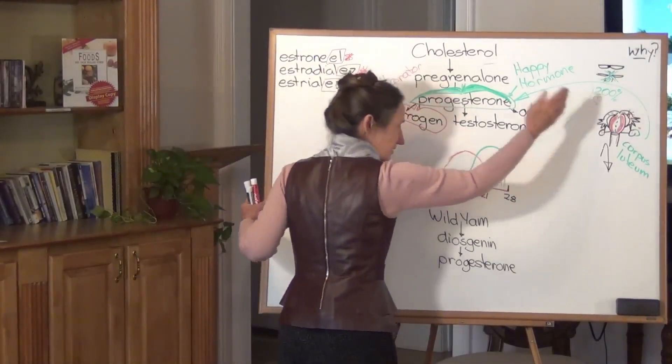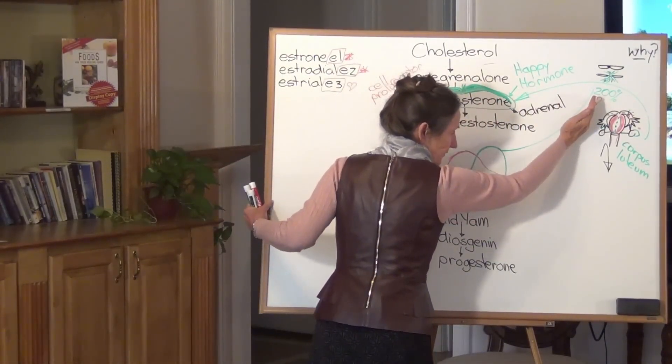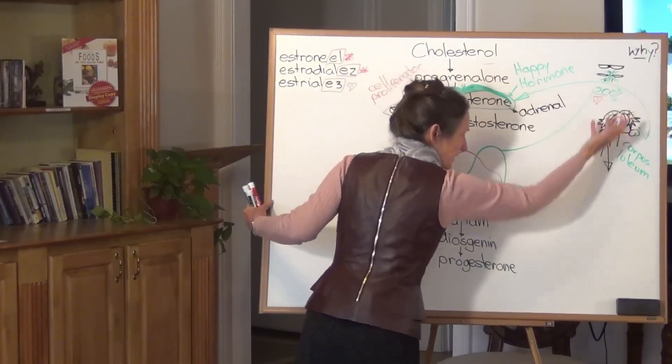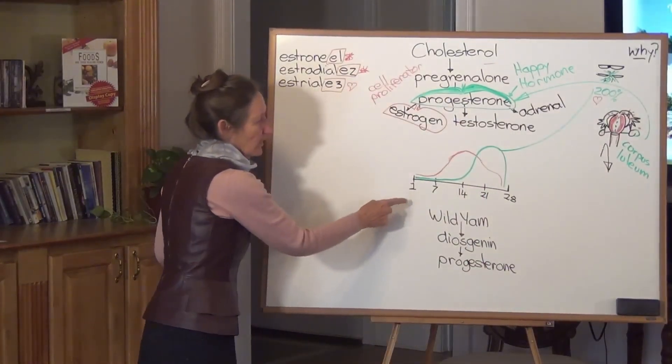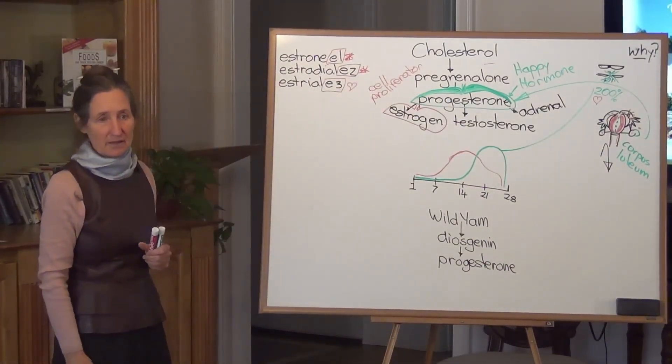the blood supply to the uterus is cut. And when the blood supply to the uterus is cut, then the blood nest comes away, and we are once again day one of the monthly cycle.